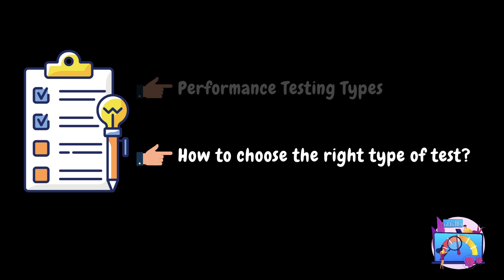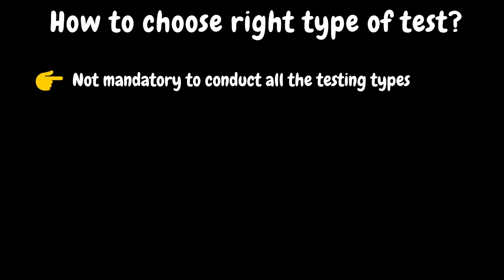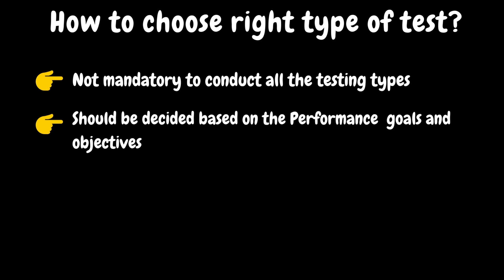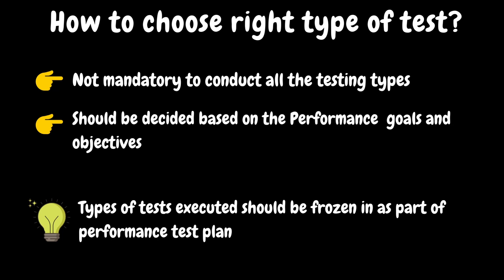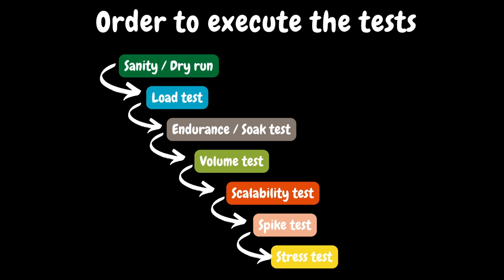Up to this point, we have discussed various kinds of performance tests. So, how to choose or recommend the right type of test for the project? It is not mandatory to conduct all the test types in every project. It is crucial to understand the performance goals or objectives of the application and recommend the necessary test types accordingly. All suggested test types should be documented in our test plan or strategy document. After developing the test scripts, we will conduct a sanity or dry run first. Following that, there will be two rounds of tests at 100% peak load along with an endurance or soak test. All other tests are optional and can be scheduled based on project requirements.